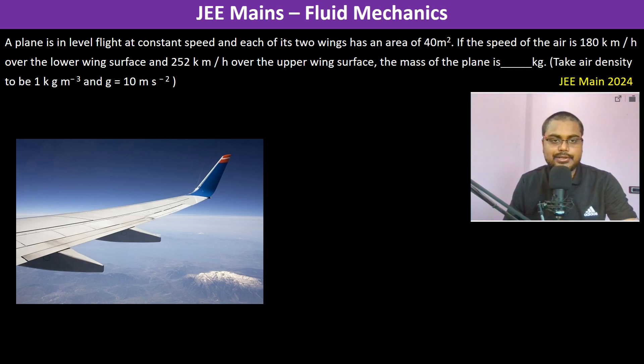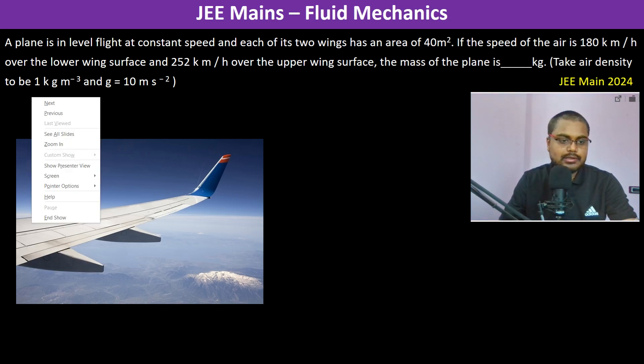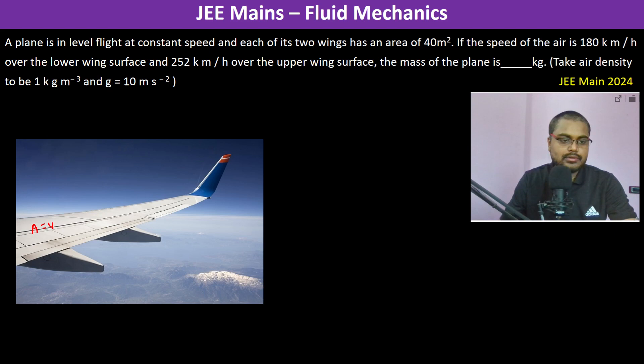A plane is in level flight at constant speed and each of its two wings has an area of 40 meter square.